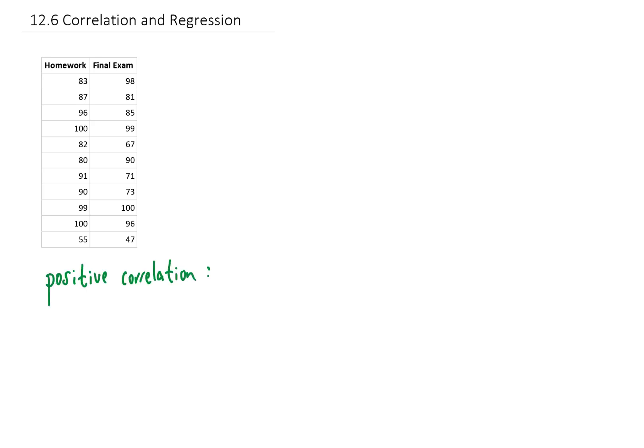A positive correlation between two variables means as one variable increases, the other increases. A negative correlation between variables would mean as one variable increases, the other decreases.